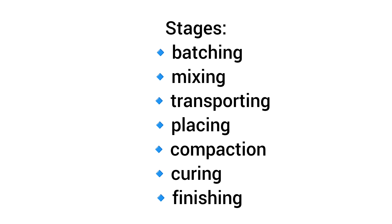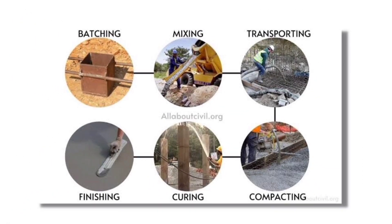The stages of the concrete manufacturing process are: batching, mixing, transporting, placing, compaction, curing, and finishing. The first stage is batching, and the two prevalent methods of batching are volume batching and weight batching.